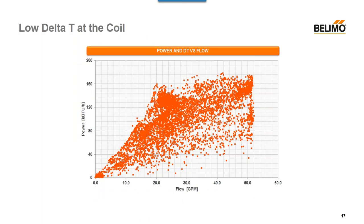Looking at actual field data from an installed valve — all the orange squares are data points. At around 20 GPM we see about 130 kiloBTUs, and at 50 GPM we also see about 130 kiloBTUs. The difference between 20 GPM and 50 GPM is a marginal ~10% increase in output. We realized that we could operate somewhere in between, leveraging that wide coil power band. That's one of the benefits of what the energy valve does — it recognizes and really optimizes the sweet spot of that coil.